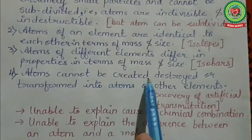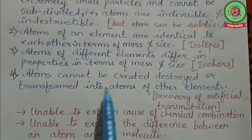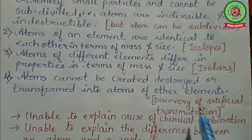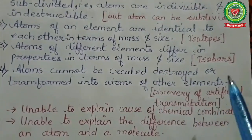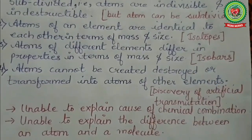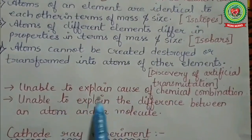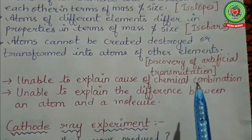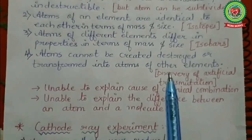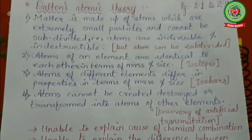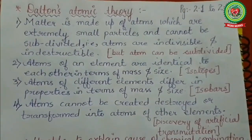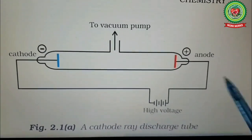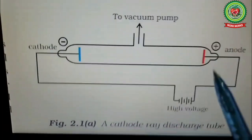The fourth point was that atoms cannot be created, destroyed, or transformed into atoms of another element. But we know that according to the discovery of artificial transmutations, we can have fusion and fission reactions. Another limitation was that Dalton was unable to explain chemical combination or the difference between an atom and a molecule.